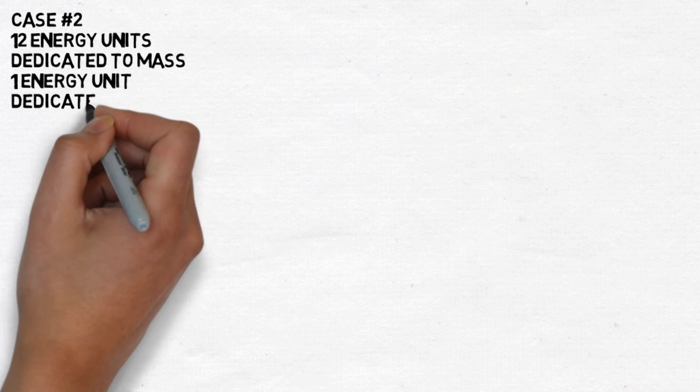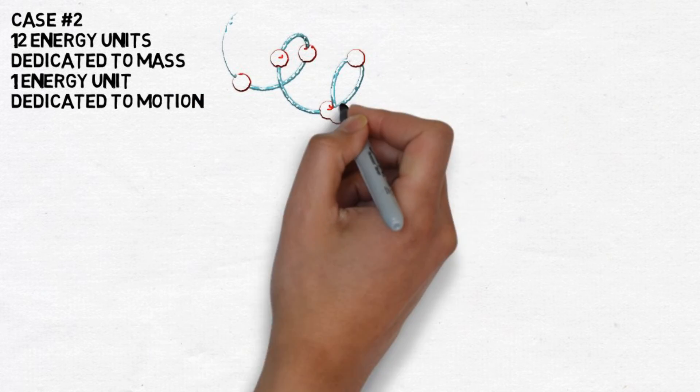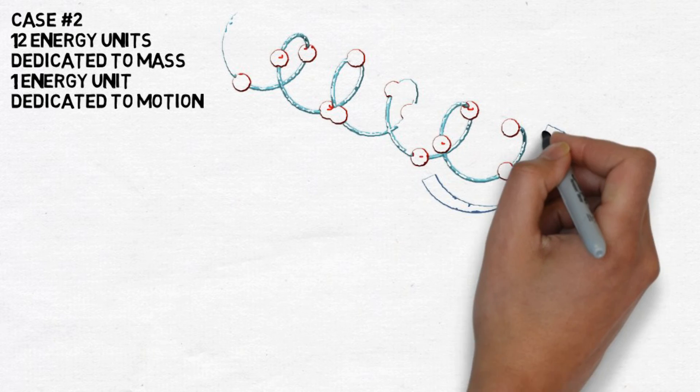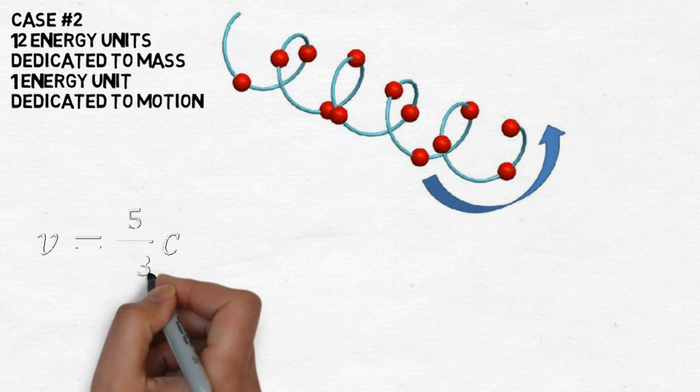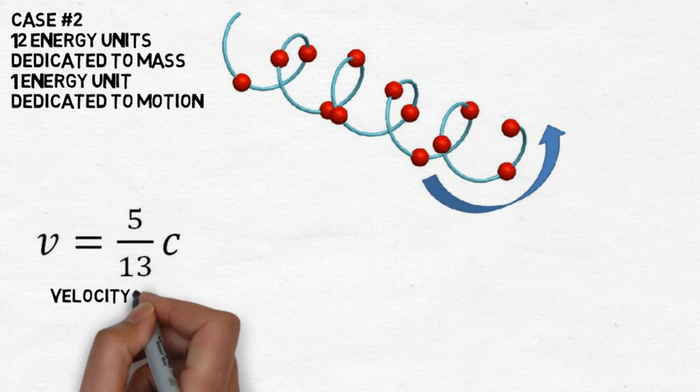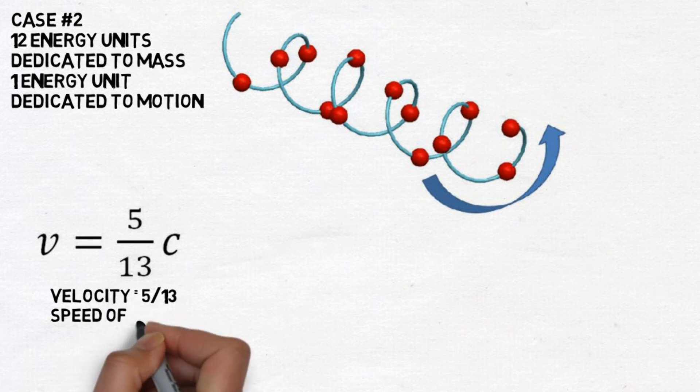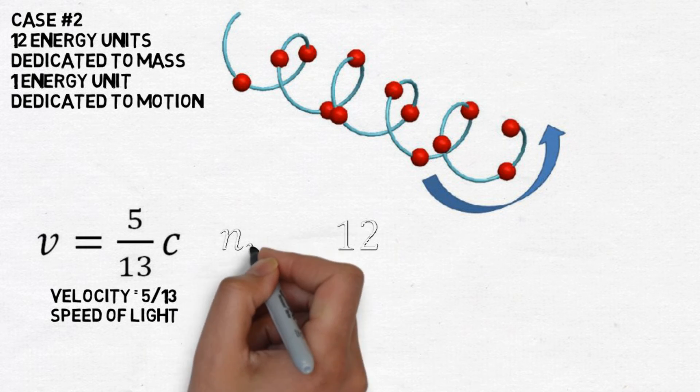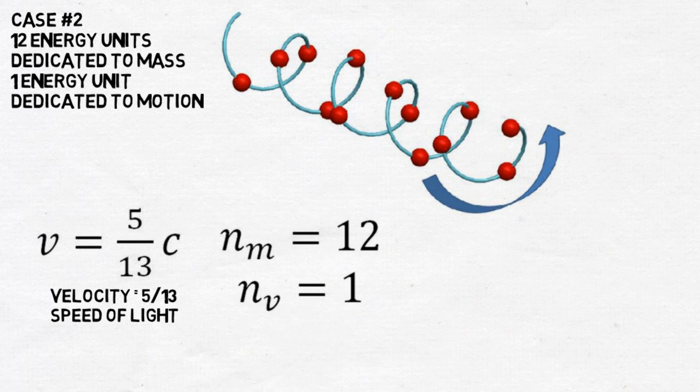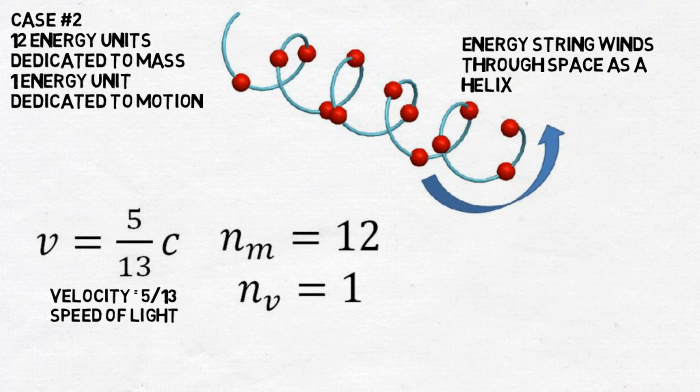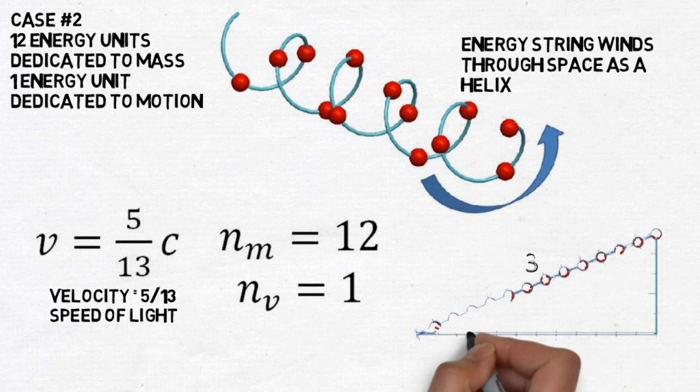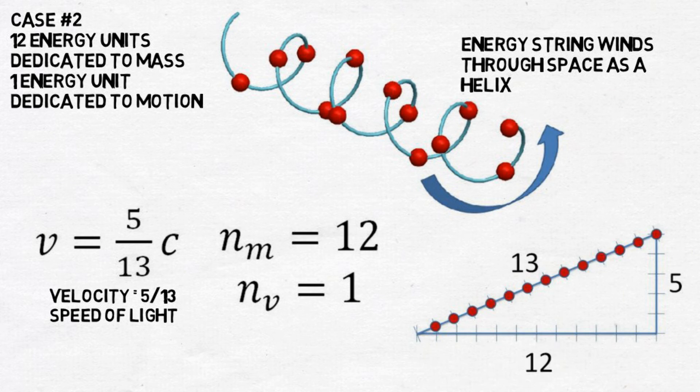In case 2, let's dedicate 12 energy units to mass and 1 energy unit to motion. This changes the shape of our energy string from a closed loop to a helix that winds through space with a velocity of 5 thirteenths the speed of light. The 5 thirteenths ratio is leg b over leg c in our energy triangle. Leg a is the 12 units dedicated to mass, leg c remains the total energy of 13, and by the Pythagorean theorem we calculate leg b to be 5, which forms our Pythagorean triple.